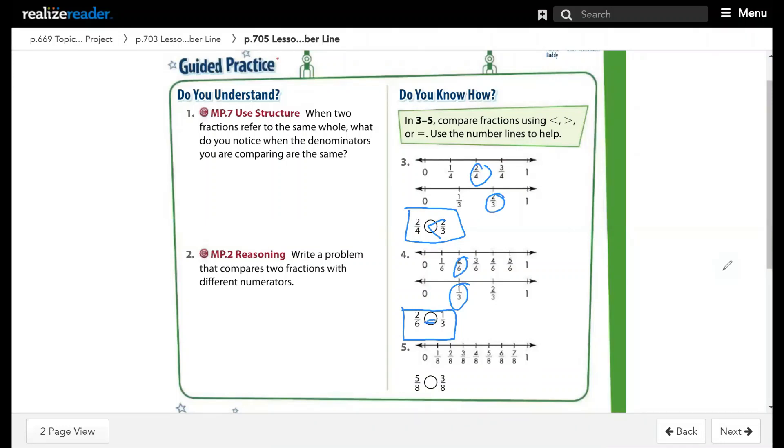Question number 5, both fractions in the same number line because both of them out of 8, so no need to do 2 number lines because the denominator the same, both of them out of 8. So the one who is on the right will be greater, so 5 over 8 here, 3 over 8 here, so 5 over 8 is greater. So the crocodile will eat the bigger.